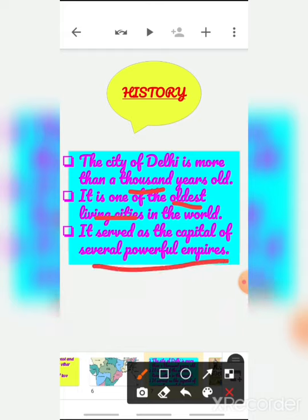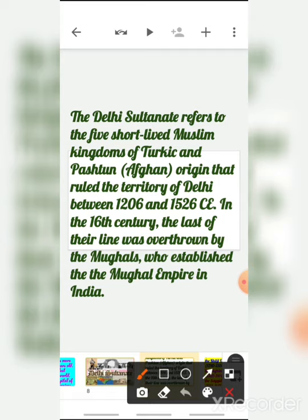Delhi served as the capital of several powerful empires — many powerful empires ruled from Delhi. Those were the Delhi Sultanate, which refers to five short-lived Muslim kingdoms of Turkic and Pashtun Afghan origin that ruled the territory of Delhi. They were from Muslim kingdoms and ruled between 1206 and 1526 CE. In the 16th century, the last of the line was overthrown by the Mughals.